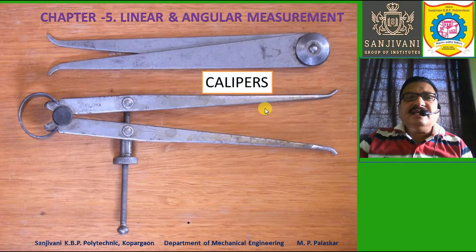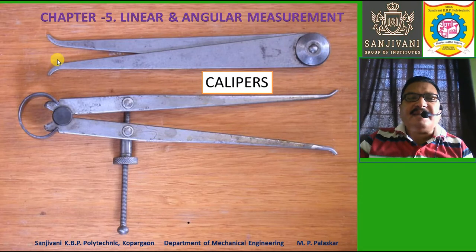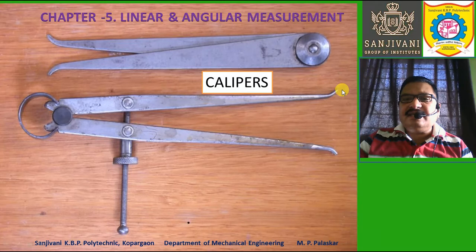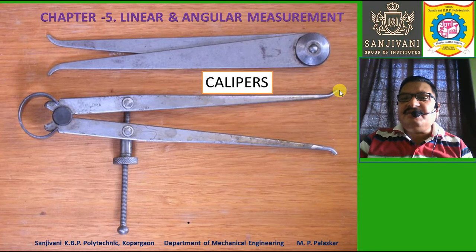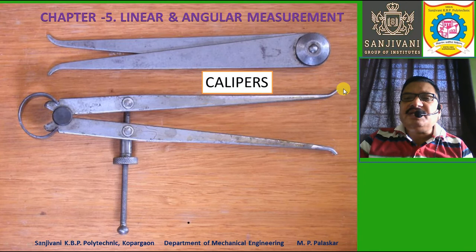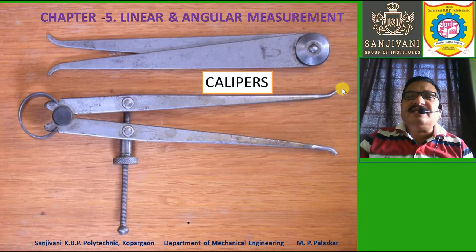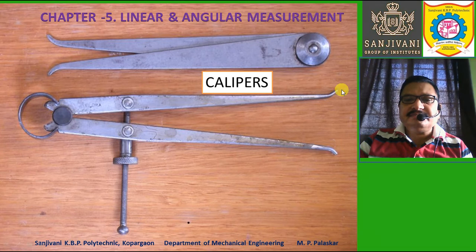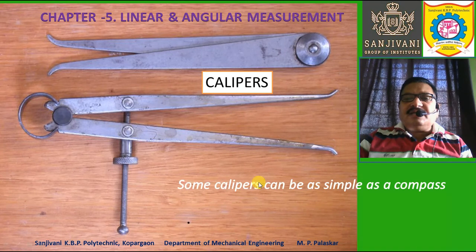These types of calipers are used to measure inner dimensions, and the ends of the legs are bent outward. The distance measured is the distance between the two endpoints of the two legs. Thus these calipers can be used for linear measurement.